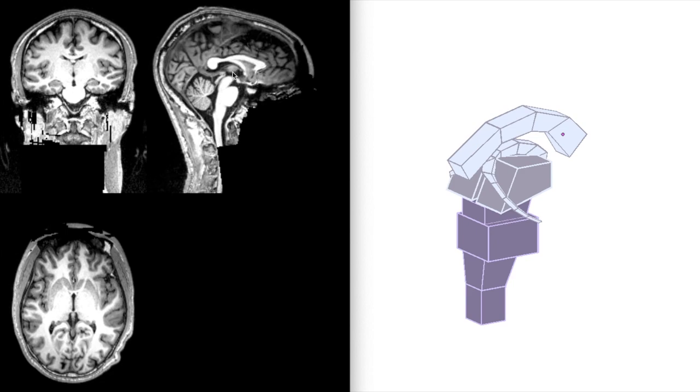Back to our sagittal image. So there's the midline. There's the fornix. There's the corpus callosum. And there's the septum pellucidum between them.